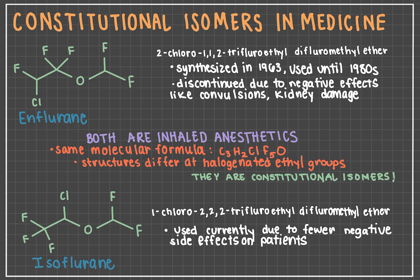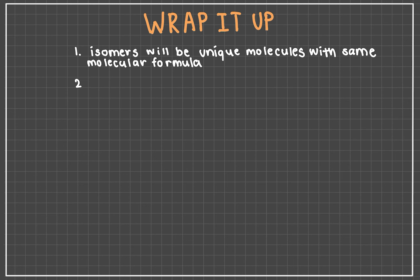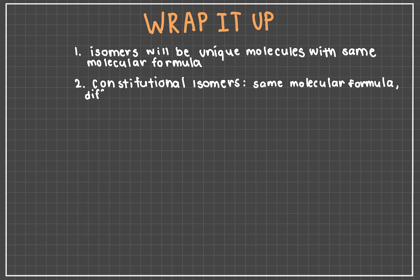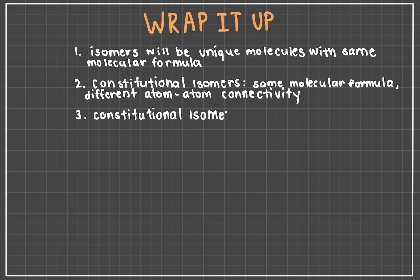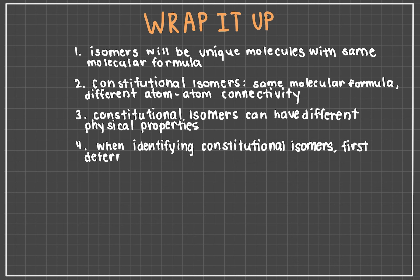So yes, organic chemistry is applicable outside of the lecture hall and exams. To summarize: 1. A group of molecules can be isomers if they share the same molecular formula but are totally unique, meaning they differ spatially, structurally, etc. 2. Constitutional isomers have the same molecular formula but differ in the way their atoms are connected or bonded to one another. 3. Constitutional isomers can have different physical properties such as melting points, boiling points, density, etc. 4. When trying to determine if molecules are constitutional isomers, a great first step is to identify if they have the same molecular formula.